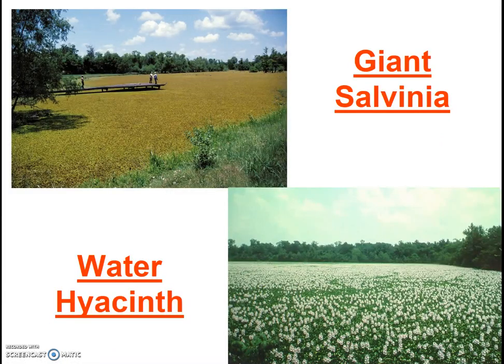Next, consider the giant salvinia and water hyacinth. Both of these plants are native to South America and are floating aquatic plants. Both pictures show ponds or lakes — not prairies — but the salvinia and hyacinth have completely covered the pond or lake. In both cases, these plants clearly alter the light regime in that they shade out formerly native species that would have existed in the water column or down on the bottom of the pond or lake.